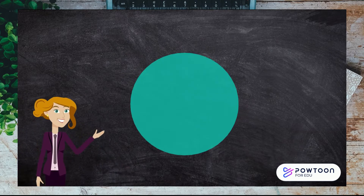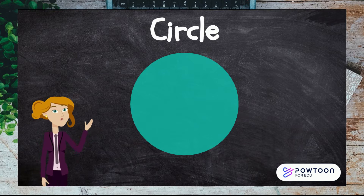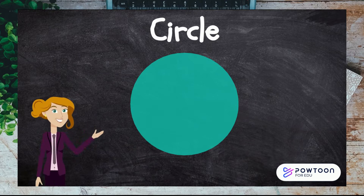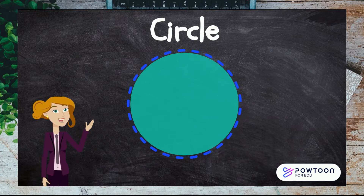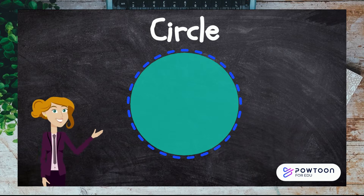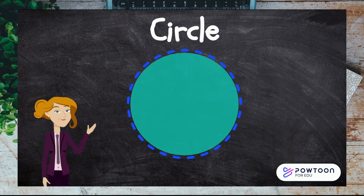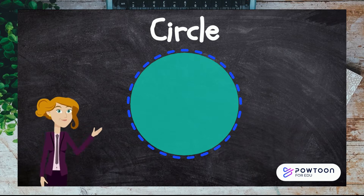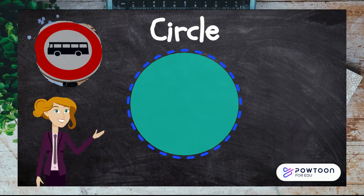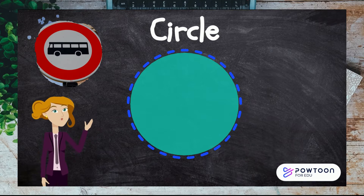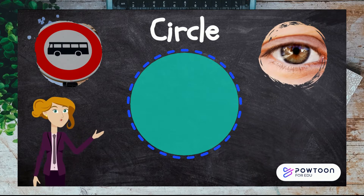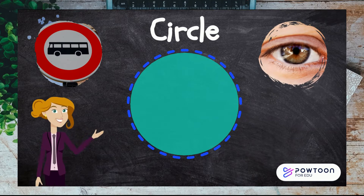Here is a circle. Can you say circle? A circle has just one line that goes all the way around. You can find circles everywhere. Some signs are circles. Even the iris in your eye is a circle. Can you think of any other things that have circles?